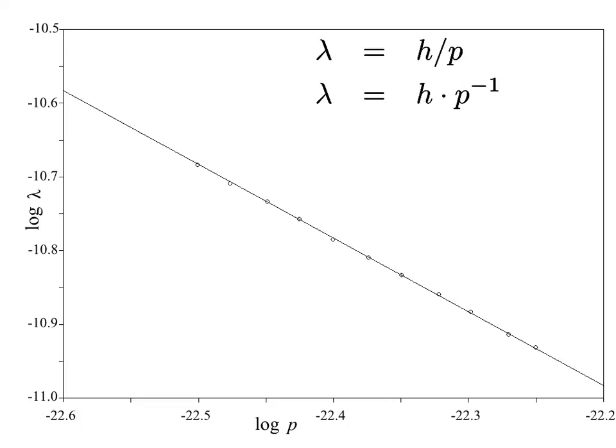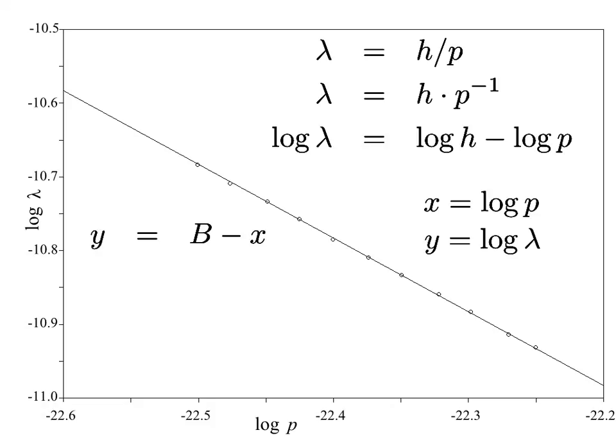Then, by taking the log of both sides, the product turns into a sum and the negative power turns the plus into a minus sign. Now, if you look at my graph, you'll notice that the x-axis is the log of the momentum. The y-axis is the log of wavelength. And that this curve is fit by a straight line with slope minus one and an offset, which I'll call b. The best fit of b to these data is minus 33.183.